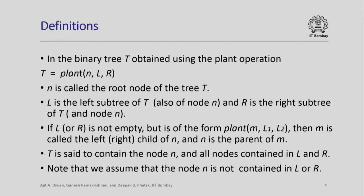The tree t is said to contain the node n and all the nodes contained in the left and right subtrees. When we build a tree using the plant operation, we assume that the node n is a new node which is not contained in the two existing trees l and r. So we take a new node and two existing trees and plant them at node n, making l the left subtree and r the right subtree.